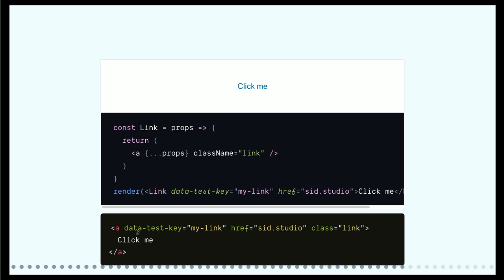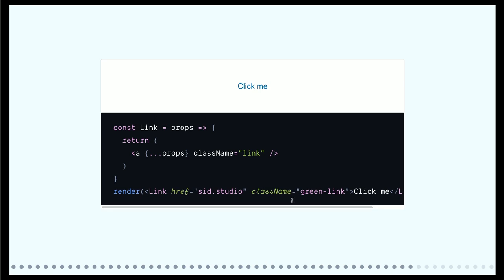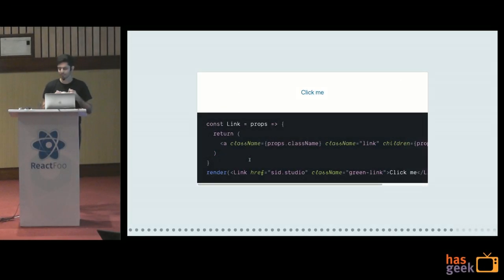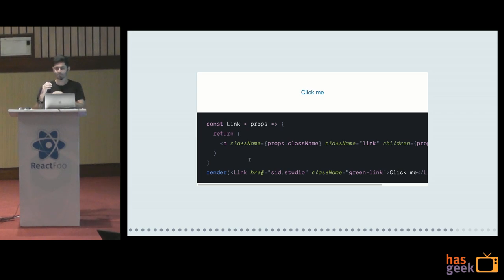This is what it renders — it takes everything, drops whatever you give plus adds the link class so it's blue. Now, for whatever reason I want to make a green link, so I pass a class name 'green-link'. Will this render a green link? No — because you're overriding whatever class comes from props. When you expand the props spread, you have class name from props and class name 'link', and the second one always overrides the first because JSX converts to a React.createElement call with an object, and you can't have two keys that are the same — the second one always wins.